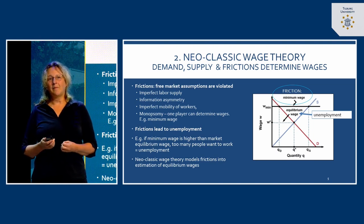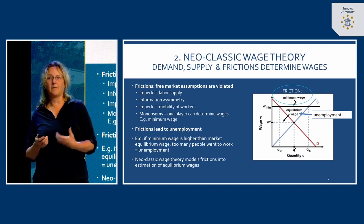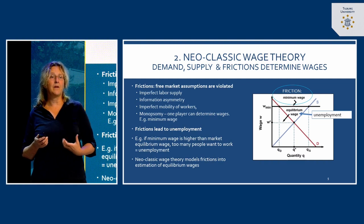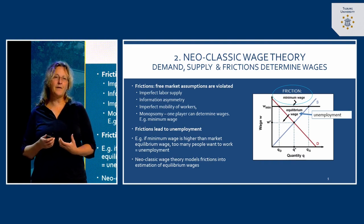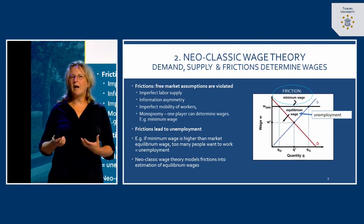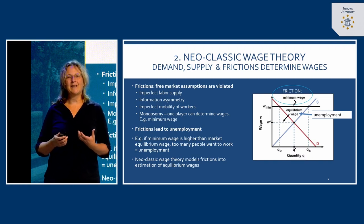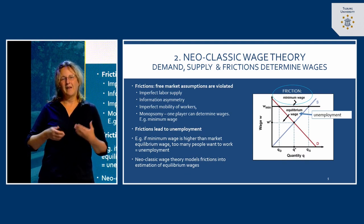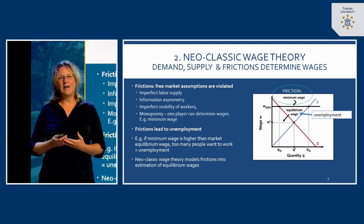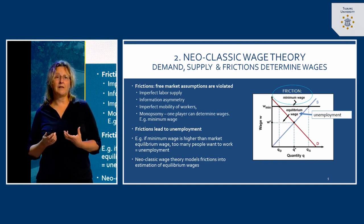For employers, there's also a monopsony caused by, for example, the minimum wage. The government says this is the minimum wage considered fair for work, meaning employers can't go lower. All these things hinder Adam Smith's idea of the perfect free market with continuous wage adjustments toward equilibrium. Frictions obstruct the realization of an equilibrium.